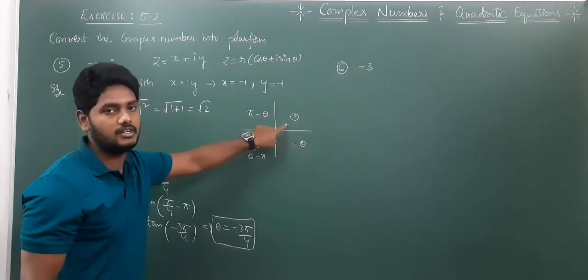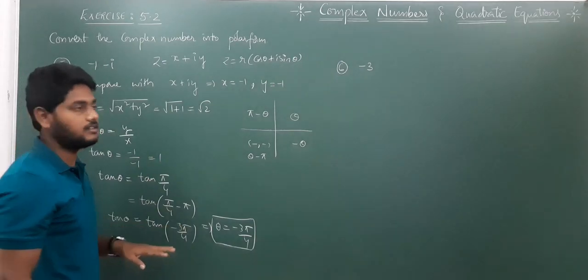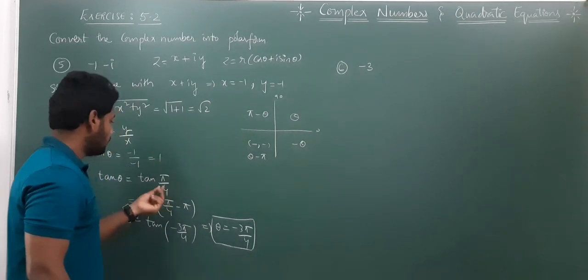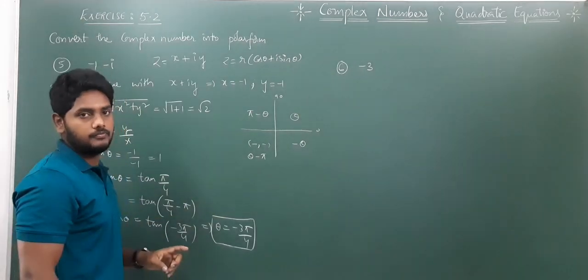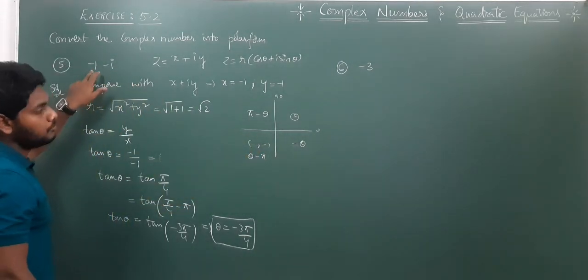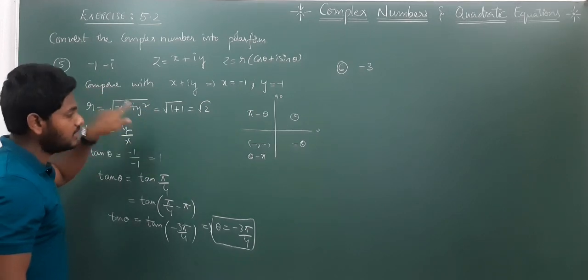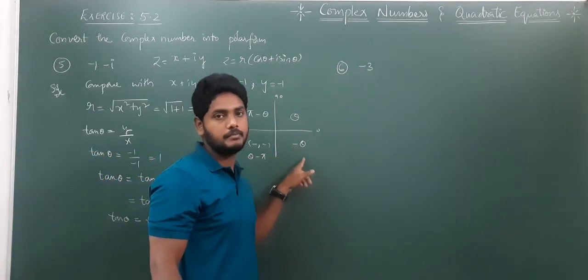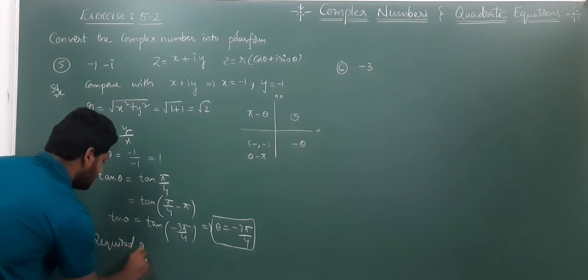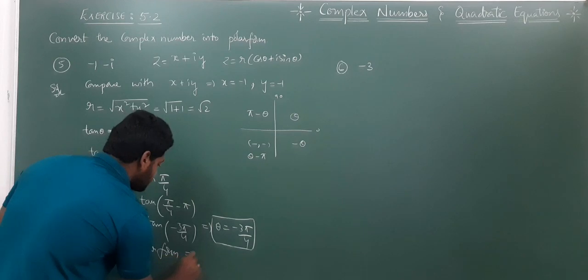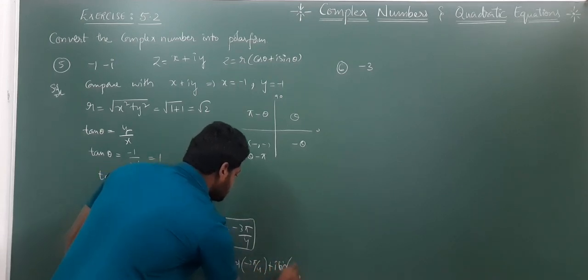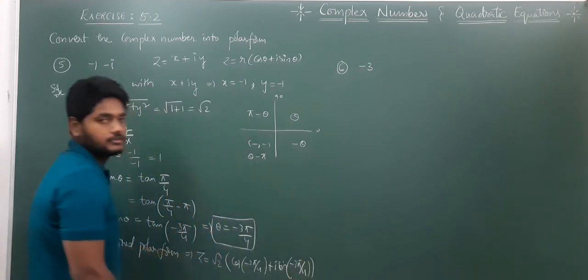For example, if the given complex number is in the first quadrant (both plus), then θ = π/4. If it is in the second quadrant, we compute π - π/4. Since this is in the third quadrant, θ = π/4 - π = -3π/4. If it were in the fourth quadrant (x positive, y negative), we'd take -π/4. Therefore, the required polar form is Z = √2 (cos(-3π/4) + i sin(-3π/4)).